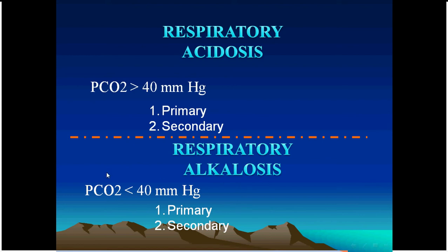Respiratory alkalosis is a washout of CO₂, caused by hypoxia (via chemoreceptors), acidosis, central stimulation, mechanoreceptors (Hering-Breuer reflex), lung stretch receptors, psychogenic causes, or head trauma — leading to hyperventilation. CO₂ washout causes bicarbonate to decrease. However, low CO₂ can also be secondary to metabolic acidosis, where decreased bicarbonate drives compensatory hyperventilation.